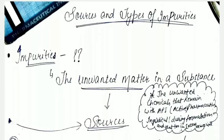Now let's proceed. Sources and types of impurities - before understanding this, it's important to know what impurities are. I mentioned this in the previous lecture: impurities are basically unwanted matter, the matter that is not important for us.